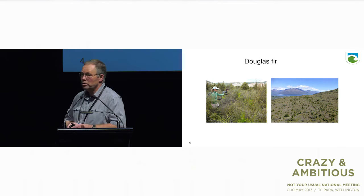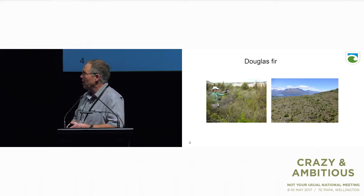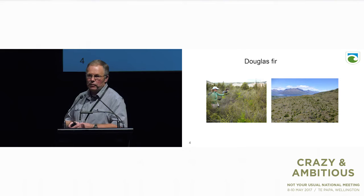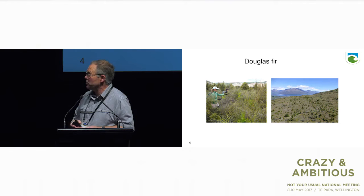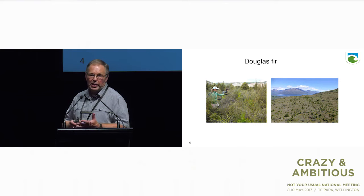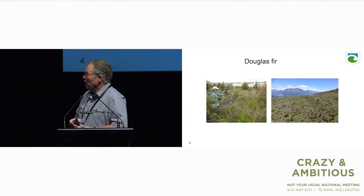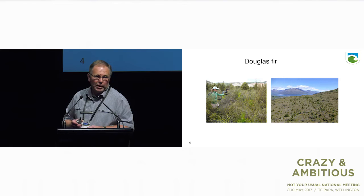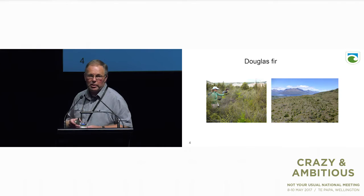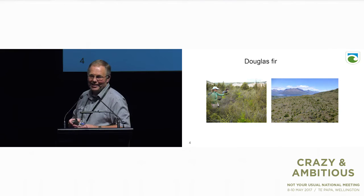The second one is Douglas fir, which has rapidly risen to be our second worst wilding conifer species. Seeds from this one can travel 40 kilometers. They don't seed until about age 12 or 13. Douglas fir is more shade tolerant and will grow in a lot more ecosystems—braided riverbeds, shrublands, wetlands, and even under beech forest canopy. These are the wildings at the back of Queenstown.